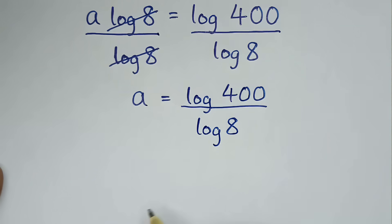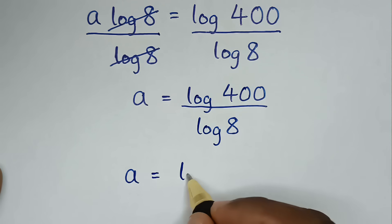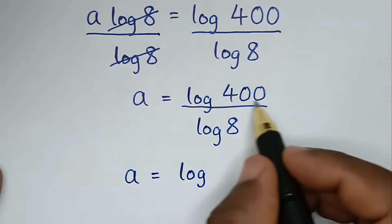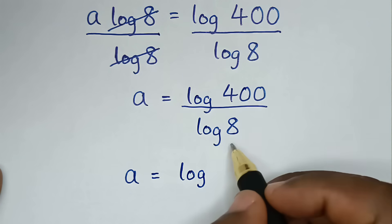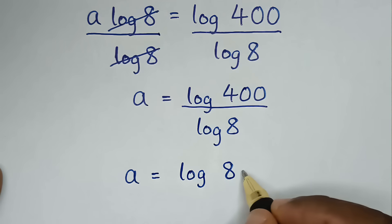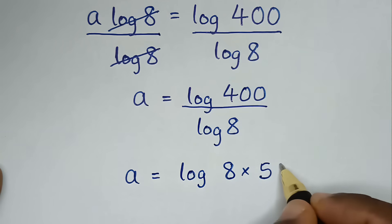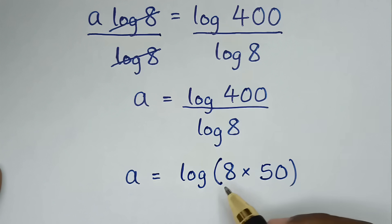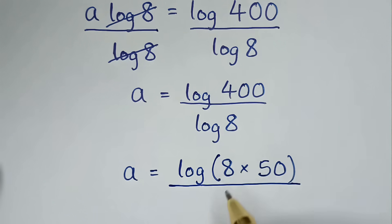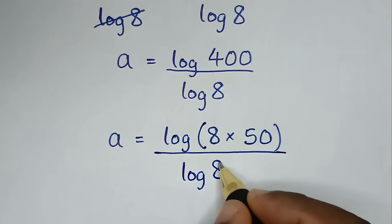Then, in the next step, it will be a is equal to log of 400. Now 400 is the same as 8 times 50, so it is log of 400 over log of 8.